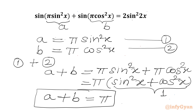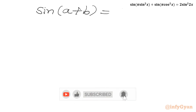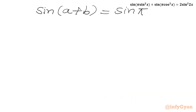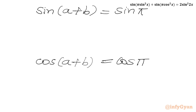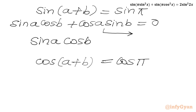Now I will consider sin(a+b). So sin(a+b) equals sin π. Applying the sin addition formula: sin a cos b plus cos a sin b equals sin π. Since sin π is 0, I can take the cos a sin b term to the RHS, giving sin a cos b equals minus cos a sin b. We will call this equation number 3.